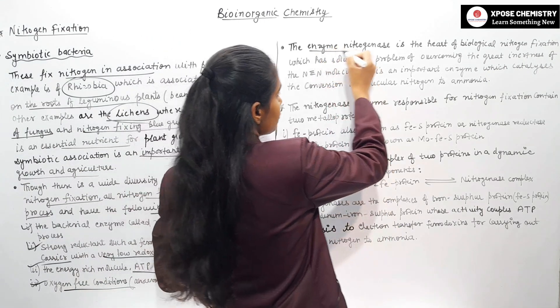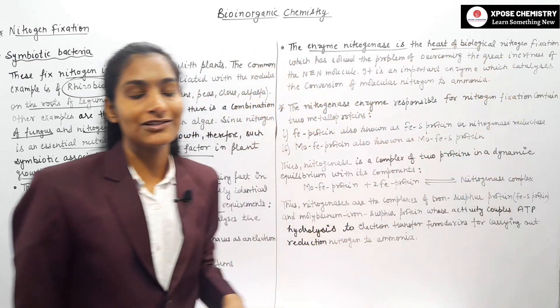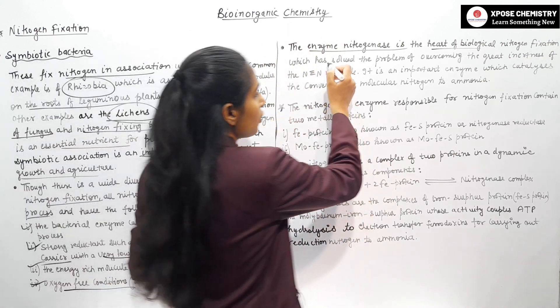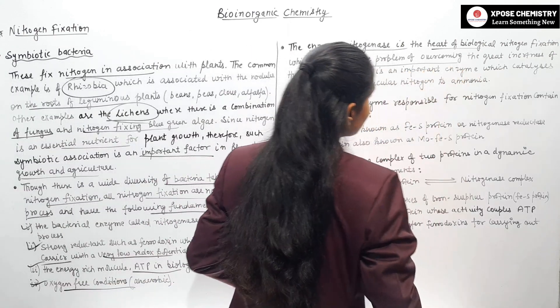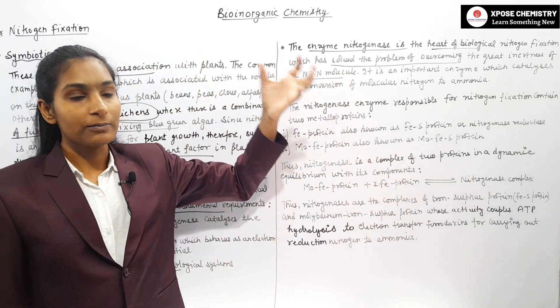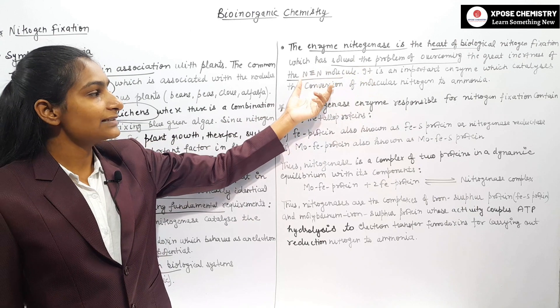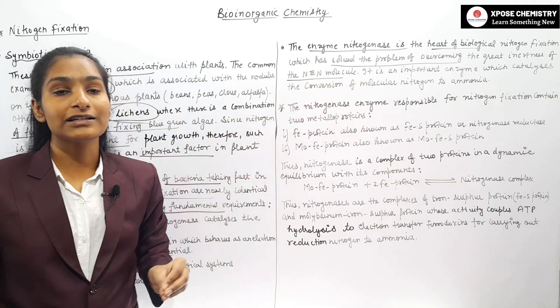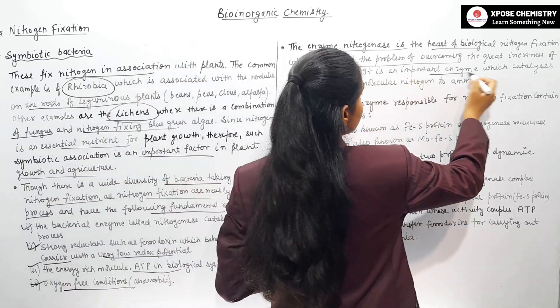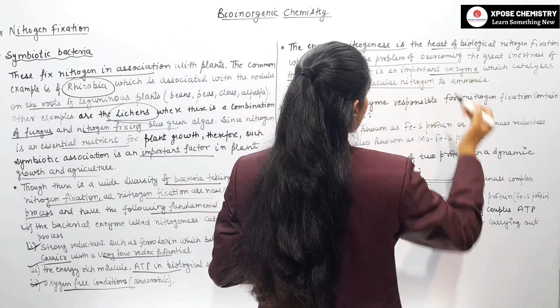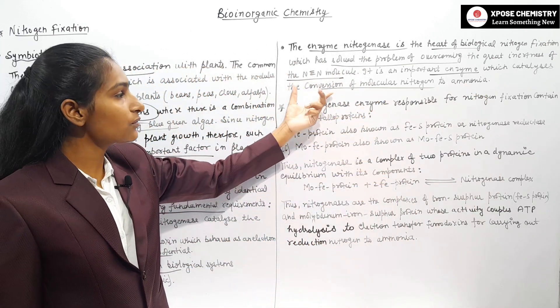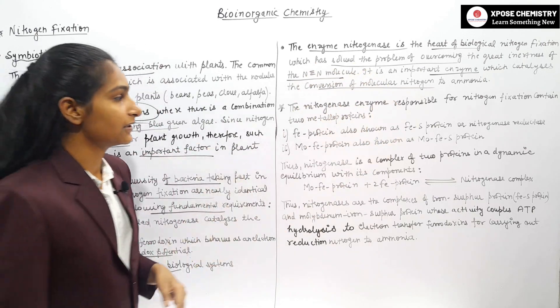Enzyme nitrogenase has solved the problem of overcoming the great inertness of N triple bond N molecule. It is an important enzyme which catalyzes the conversion of molecular nitrogen to ammonia.